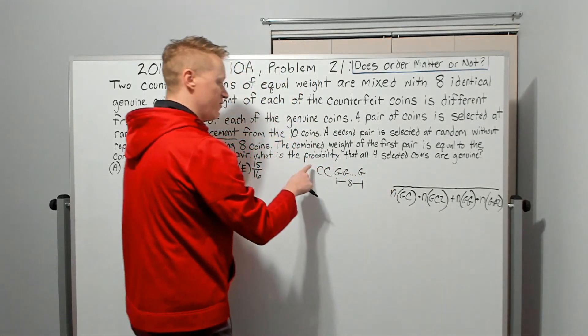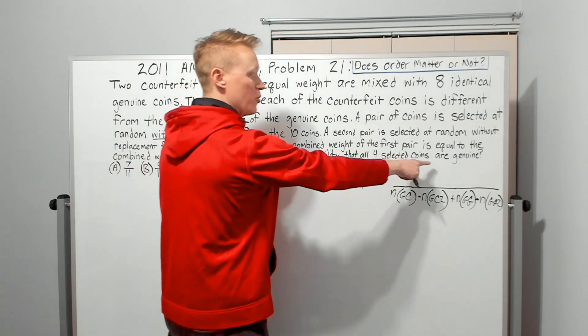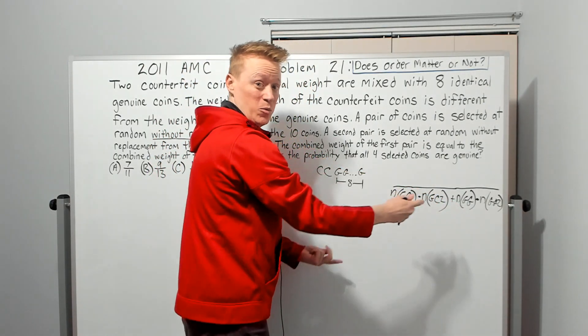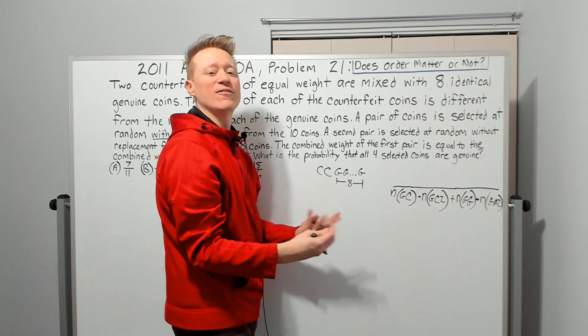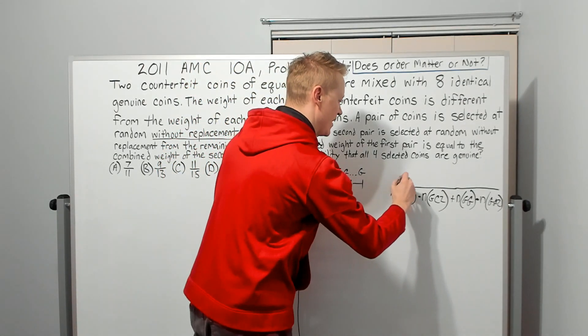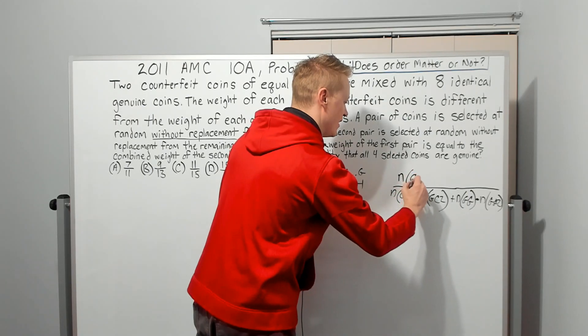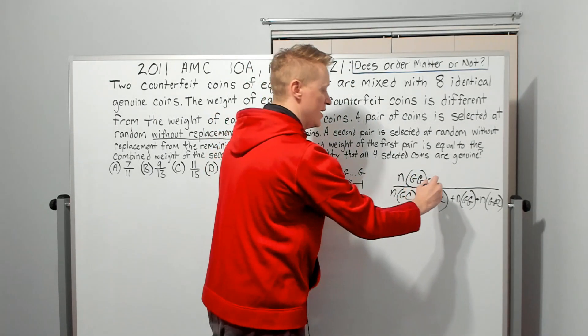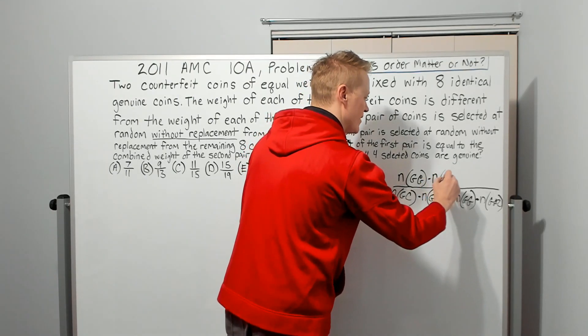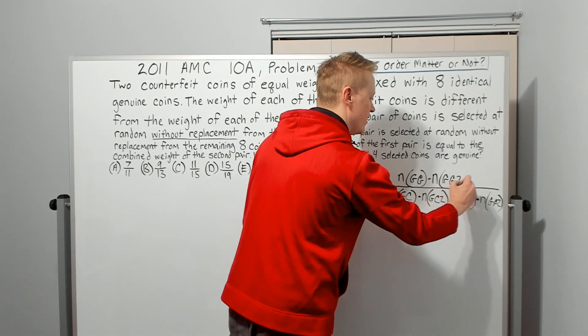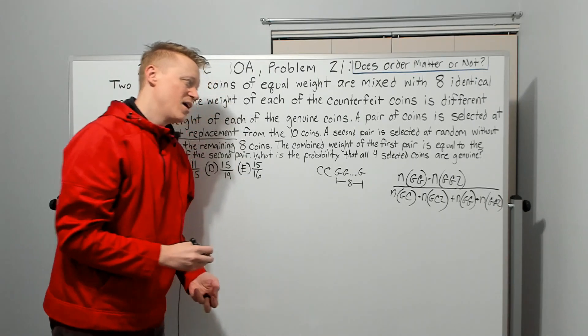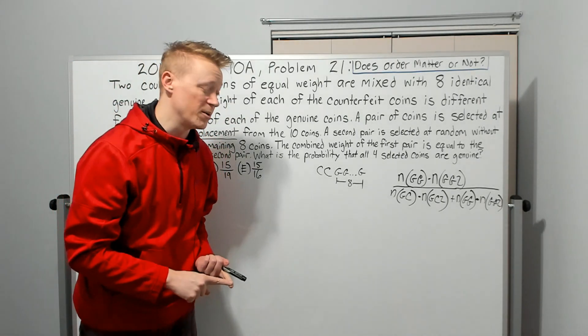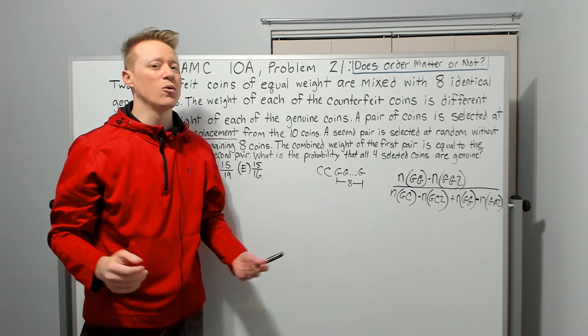Then what we're looking for is the probability that all four selected coins are genuine. We just want that. That's what we want. That's the numerator. That's the favorable outcomes. So we're gonna say it's the number of ways to get genuine genuine, this is on the first draw, times the number of ways to get genuine genuine on the second draw. All right, so now we come to the fateful question. Do we do order matters or do we do order doesn't matter?